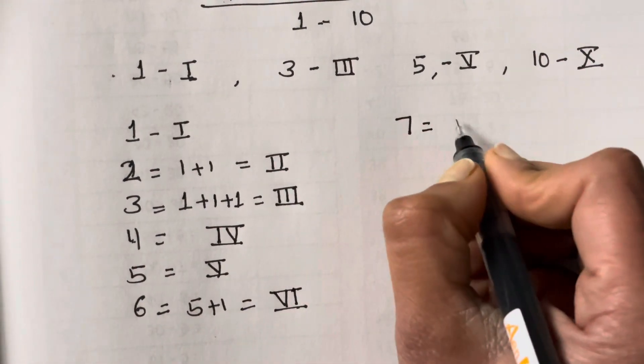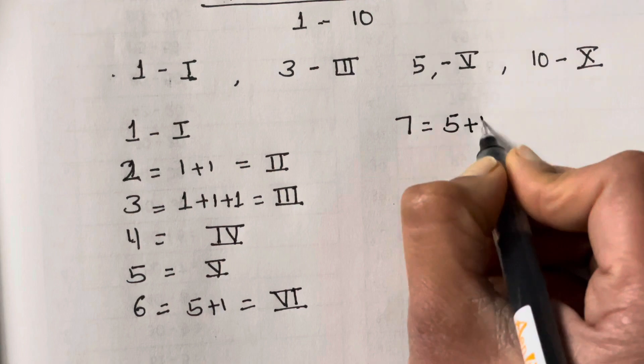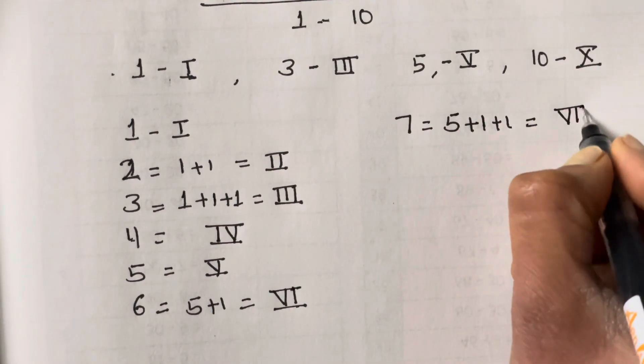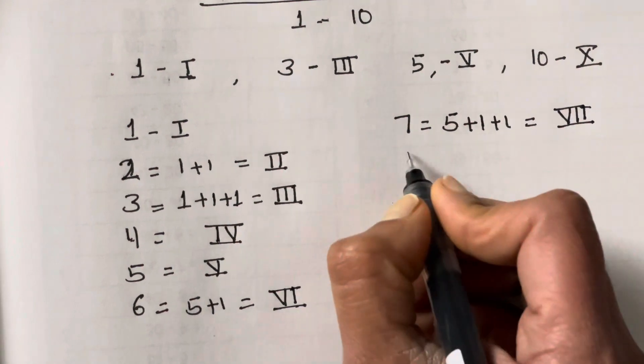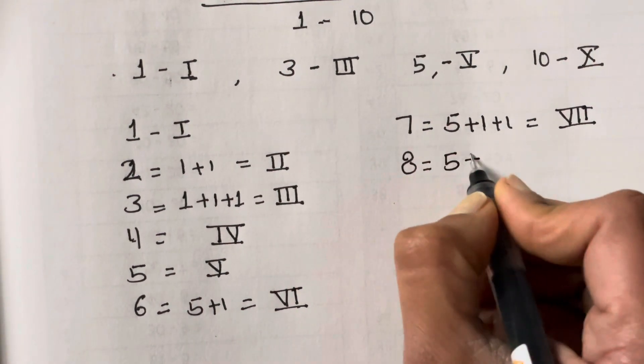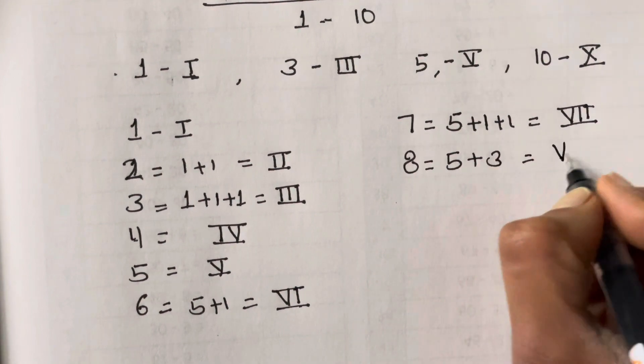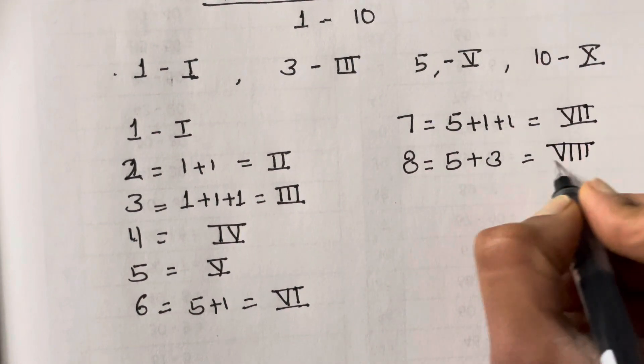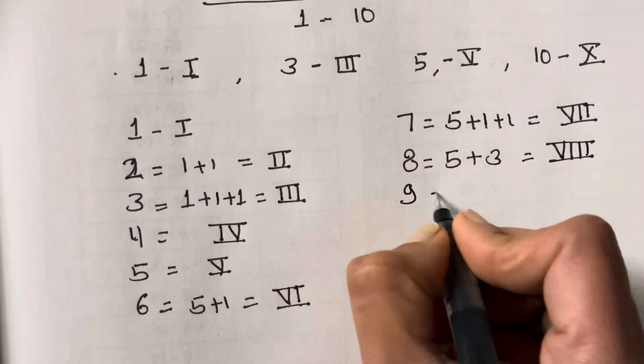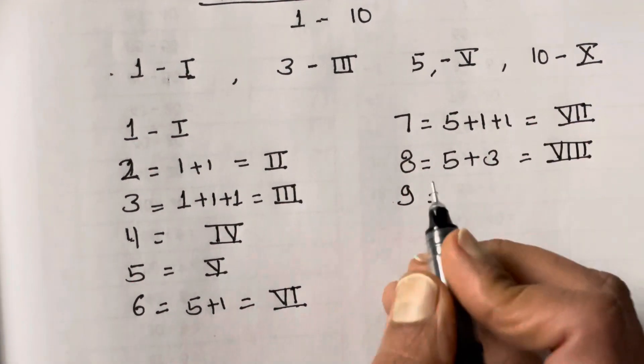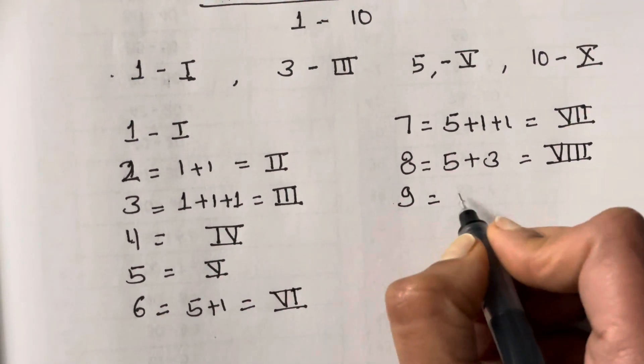Then 7 is 5 plus 1 plus 1, which is VII. And then 8 is 5 plus 3, which is V plus III, so VIII. Then 9 you can write as 10 minus 1.